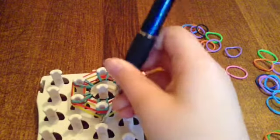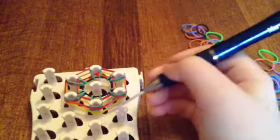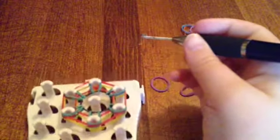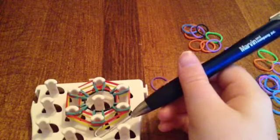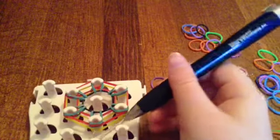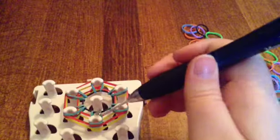So once we are done with that step, it should look like this. Now what we are going to do is there is a blue band with two red bands and a blue band. And we need to get to these yellow bands, so we are going to pull back all of those blue and red bands.